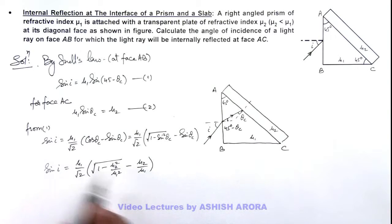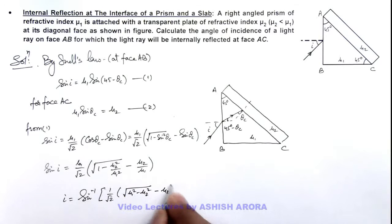So further on simplifying, μ₁ gets cancelled out and the value of i we are getting is sin⁻¹ of (1/√2)[√(μ₁² - μ₂²) - μ₂]. This is our final result of the problem.